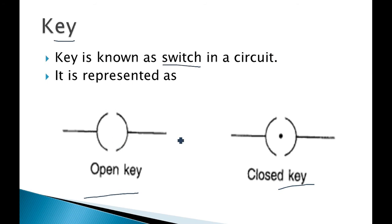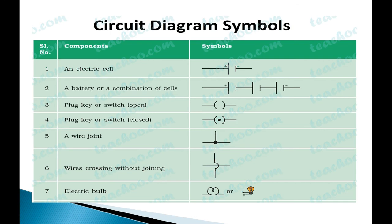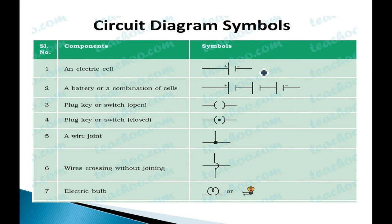The open key representation uses two brackets with a gap, and the closed key uses two brackets with a line connecting both sides. Now we need to understand the symbols we must remember while making a circuit diagram. The first symbol is a cell: a bigger line for positive and a smaller line for negative — a single plus and minus pair is known as a cell.